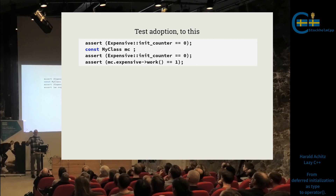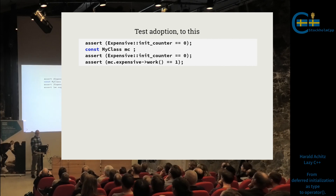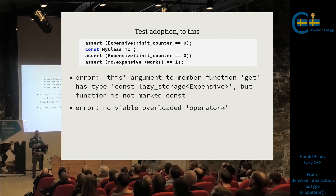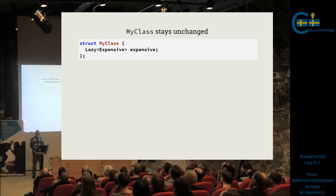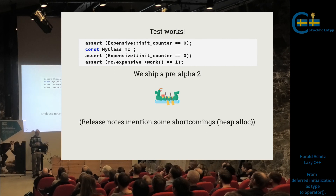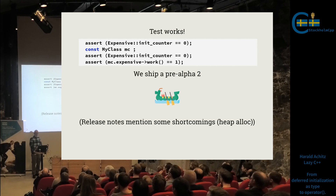We get feedback: people want const support. Wait — this is a lazy type, it changes state through deferred initialization. But the user says: I have a config object, from time to time it needs to do expensive work getting values from remote, but otherwise it should be constant. You've convinced me. With const we have two problems: lazy storage is not const, and we need a const overload for the arrow operator. We add the mutable keyword so it can be changed even when const, and add the const overload.